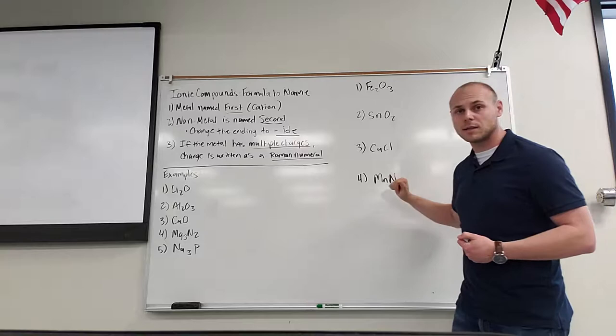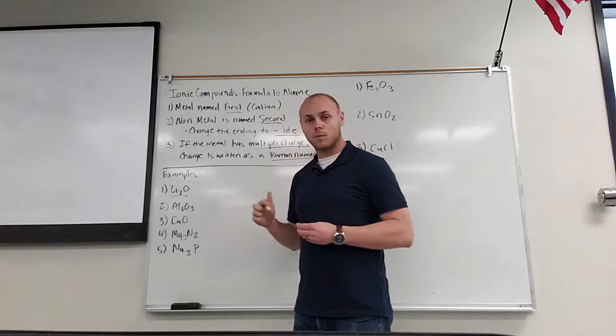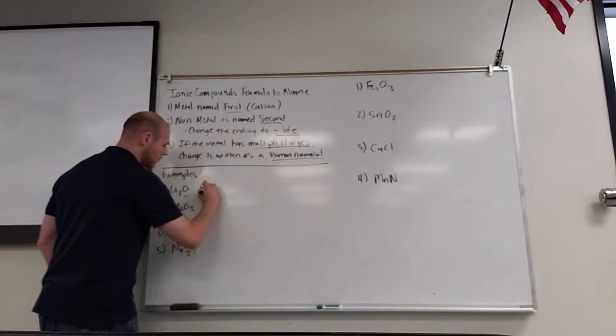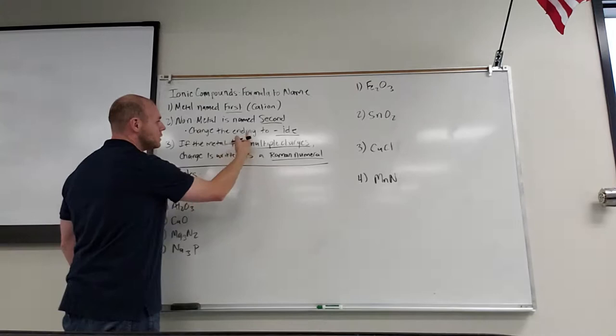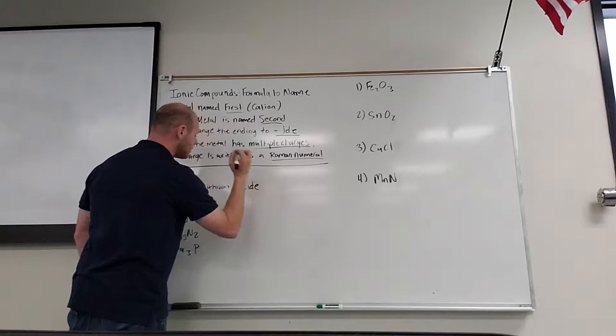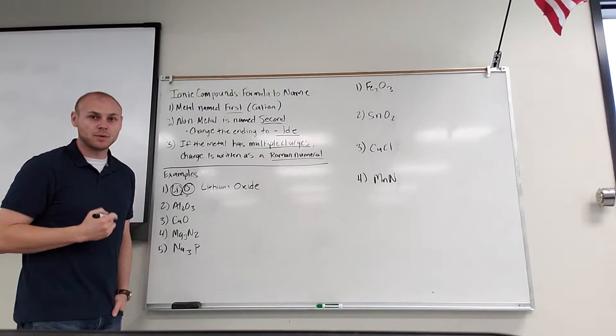Let's start with Li₂O. The first thing we need to do is name the cation. The cation in front is Li and the anion is O. Li is lithium and O is oxygen. Because it's an anion and it's the second word in the name, we change the ending to "-ide", so oxygen becomes oxide. Li₂O is lithium oxide. Simply name the cation first, name the anion second, and change the ending of the anion to "-ide".